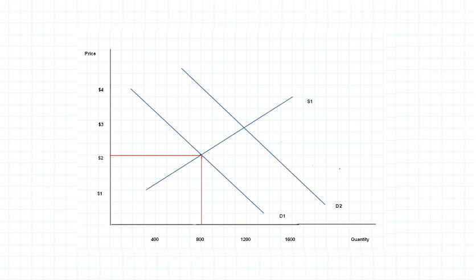However, the equilibrium has changed. Where's our original equilibrium? Here, $2, 800 units. Now, nothing has changed on the supply side. Supply still remains S1, so producers are still willing to supply 800 units.